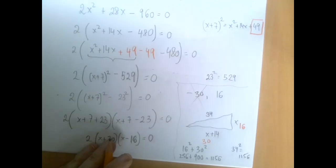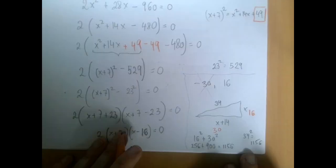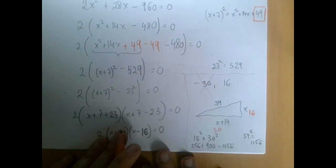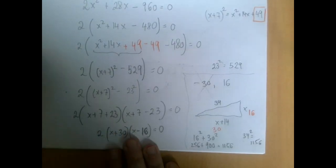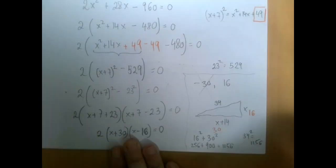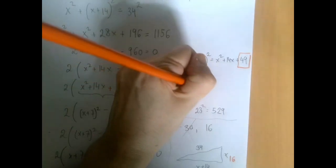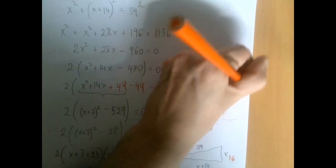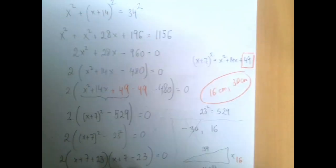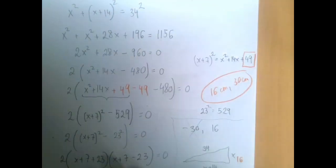We can check: it's the 8-15-17 triple just doubled up, so the Pythagorean theorem will work and our answer is correct. The missing sides are 16 centimeters and 30 centimeters long.